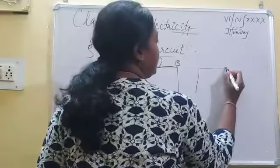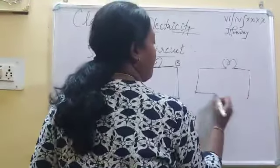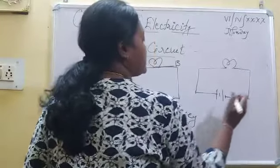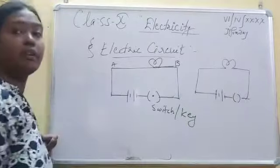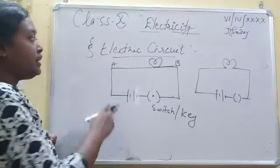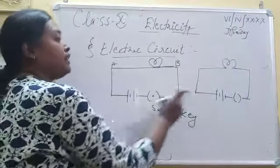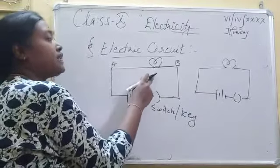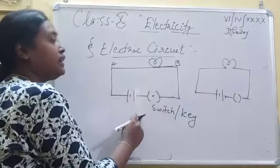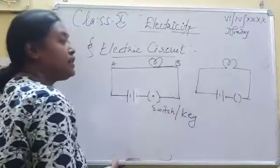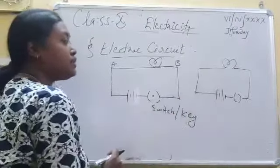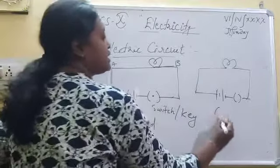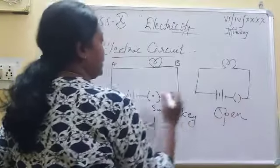This is the open circuit — here current is not flowing. Here current is flowing, and here current is not flowing. How will you find that the current is flowing or not? In this case the bulb will glow, that means the current is flowing. In this case the current is not flowing. This is known as the closed circuit and this is known as the open circuit.